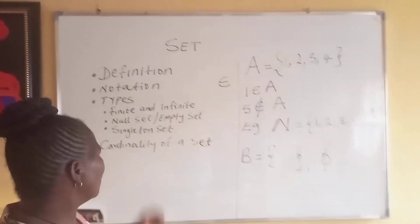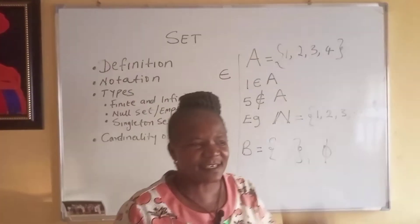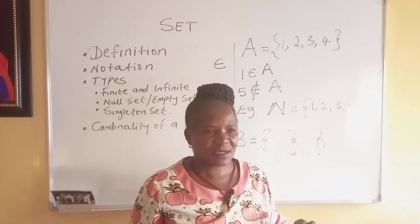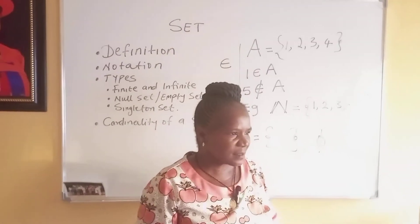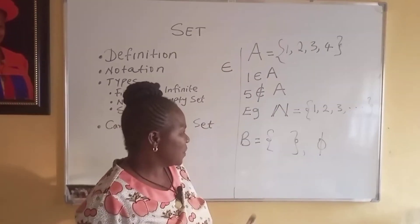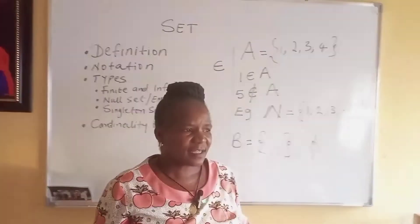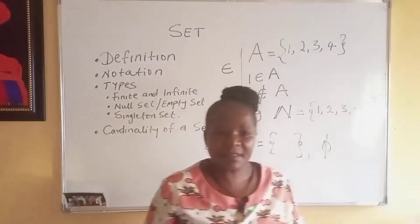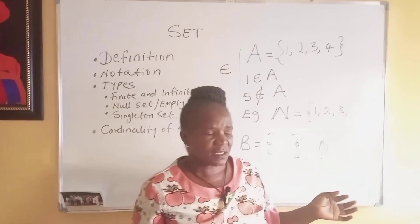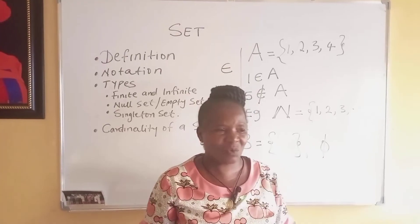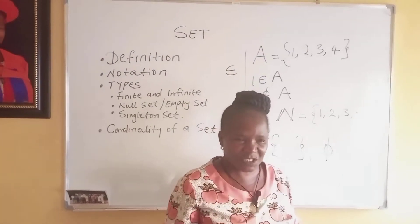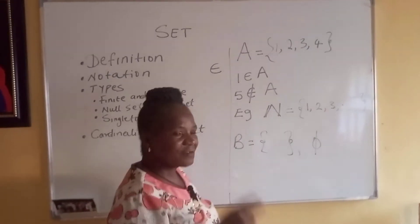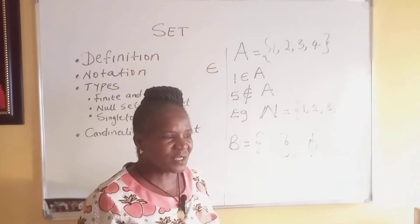A singleton set is a set that contains only one element. For example, the set whose element is the Vice-Chancellor of Nnamdi Azikiwe University in 2002. It will have only one element, because we don't have two vice-chancellors at the same time. So it's a singleton set.